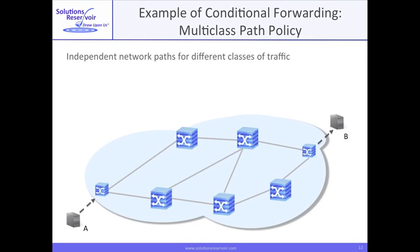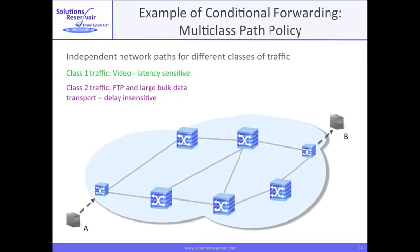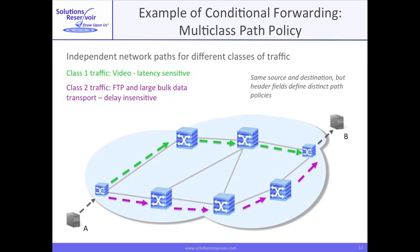Here's an example of conditional forwarding for traffic between A and B. The latency-sensitive traffic is forwarded along one path, while other traffic is forwarded along another. Note that all the traffic has the same source and destination IP address, so the distinction is made using other factors, such as TCP ports.